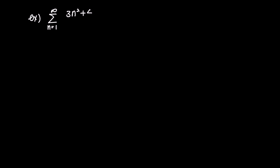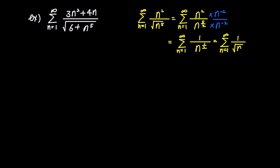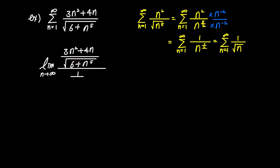Here is our second example: the infinite sum of 3n squared plus 4n over square root of 6 plus n to the power of 5. Taking only the highest powers from the numerator and the denominator, the second comparison series becomes n squared over square root of n to the power of 5. Expressing it as n squared over n to the power of 5 over 2, then multiplying both the numerator and denominator by n to the power of negative 2, simplifies it to 1 over n to the power of one-half, giving the infinite sum of 1 over square root n.